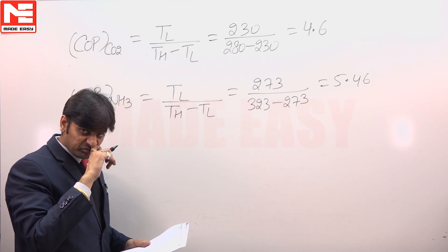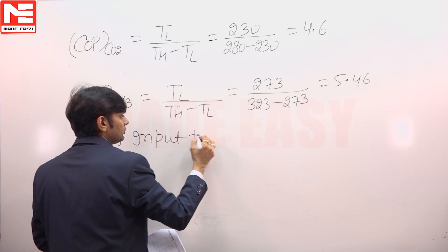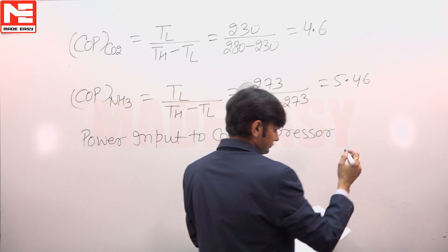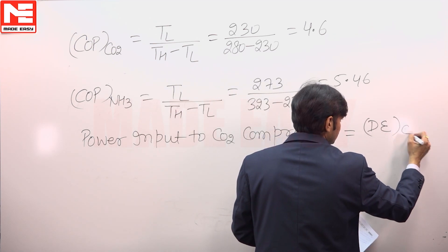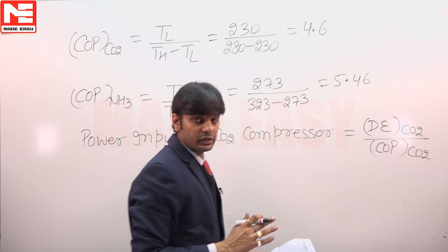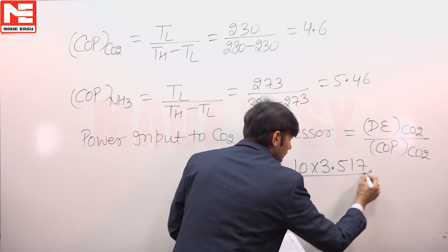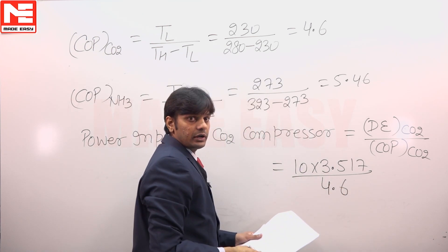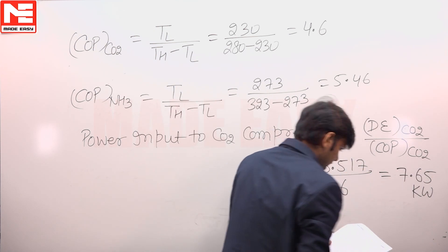The power input to the CO2 compressor is equal to the desired effect for CO2 divided by the COP of CO2. The desired effect is given as 10 TR, so it is 10 multiplied by 3.517 kilowatts, divided by the COP of CO2, already calculated as 4.6, giving 7.65 kilowatts.